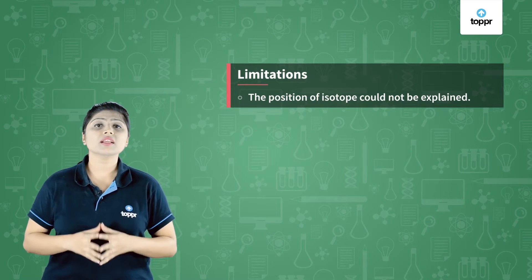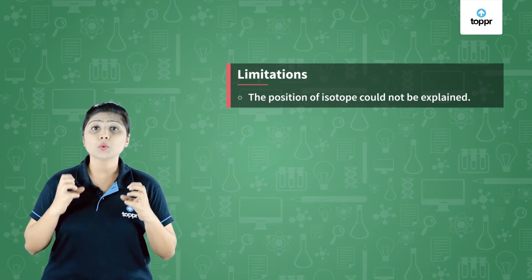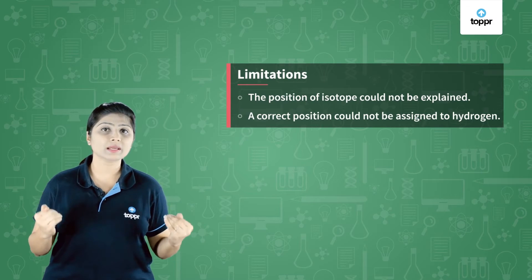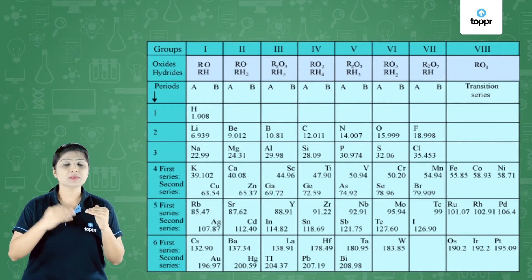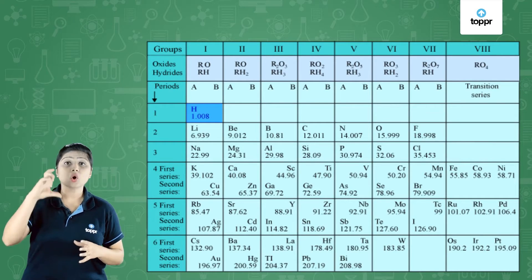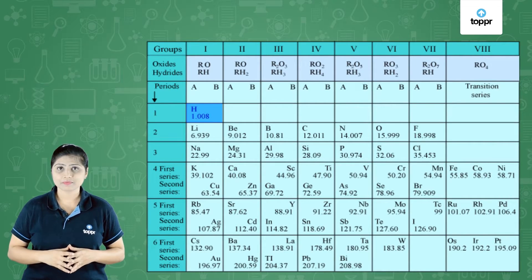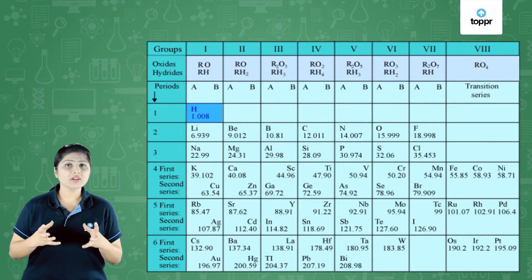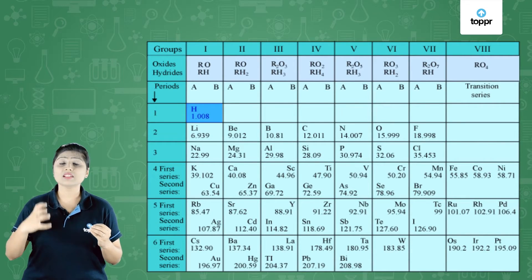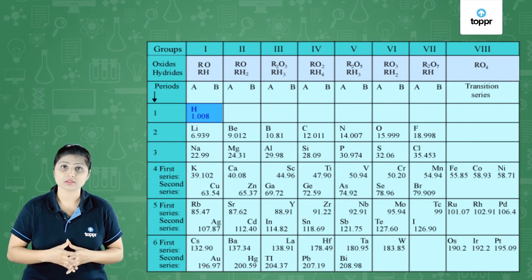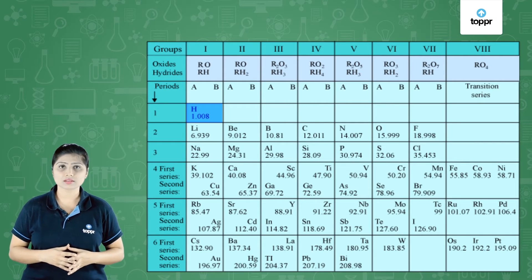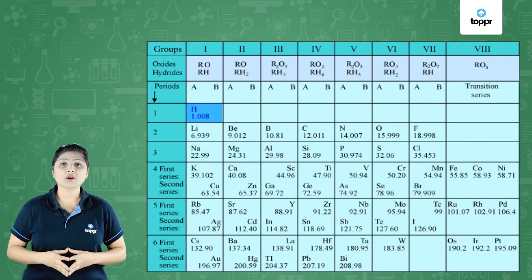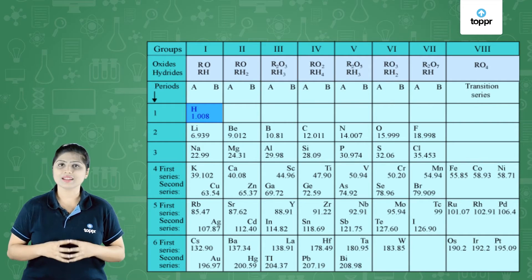According to the second limitation, the position of hydrogen in the table was not clear. Hydrogen was placed in the first column, in the column of the metals. But hydrogen is not a metal — it also behaves like a halogen, so it has to be placed with halogens. This was the confusion which was created in the periodic table regarding hydrogen.